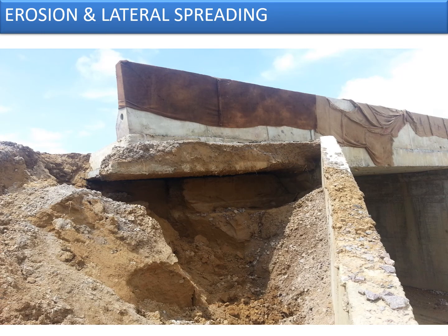Erosion and lateral spreading of soil are a major concern for approach slab settlement during the construction phase. Necessary precautions must be taken to ensure a proper drainage system is established before the onset of the monsoon. Even if work is completed per specification, allowing water to move through sloping portions and erode the placed and compacted soil ultimately allows compression, consolidation, and settlement of the approach slab — which is an avoidable outcome.